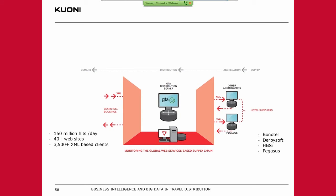This slide represents a little bit about how that process works. The XML request comes in on the left-hand side, goes into our GTA distribution server, which analyzes our own database for contract rates and availability of hotels. It also goes out of our data center to other aggregators — like Bonitel, Pegasus, and DariSoft — to return responses, and we push the results back out to the client.